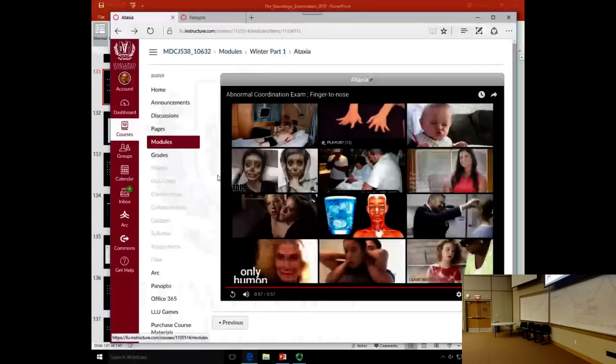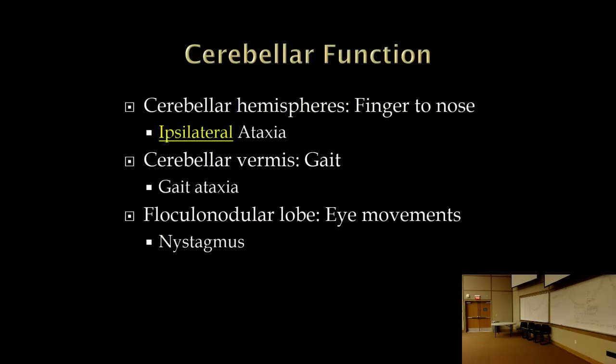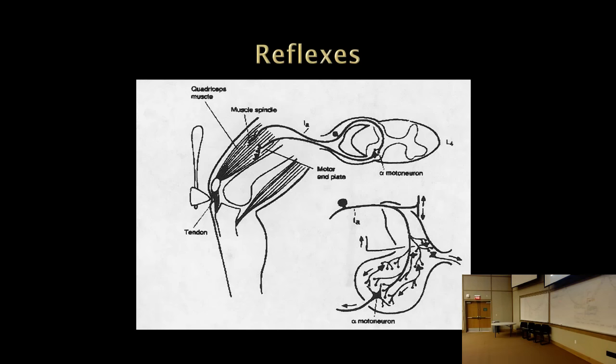In the lecture on the cerebellum we'll go through many different conditions that can cause ataxia. For now, just learn that a lesion in the right cerebellum causes ataxia on the right side of the body — it's ipsilateral. This happens because the pathways cross twice. More detail on that later.